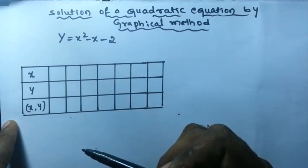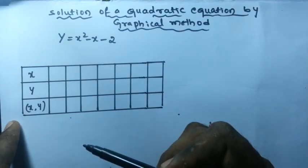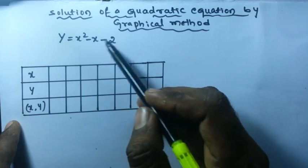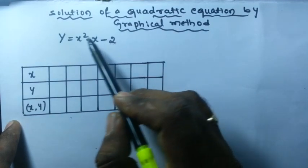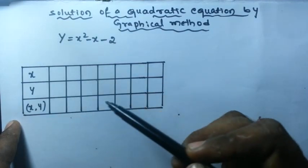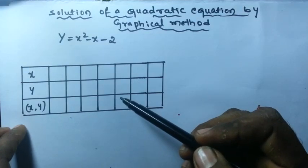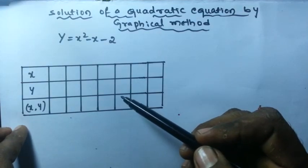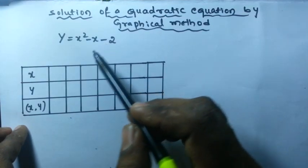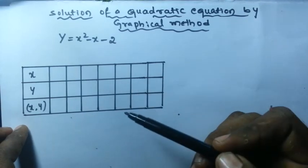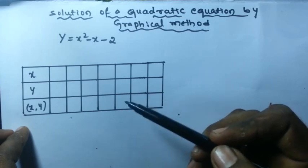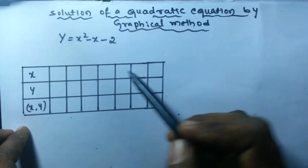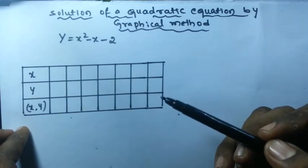How to find the coordinates? First, give the values for x: 0, 1, minus 1, like that, and we will get the value of y. There is one confusion — how many values do you need to find? There is a shortcut to find how many values you need.